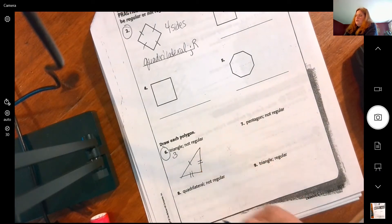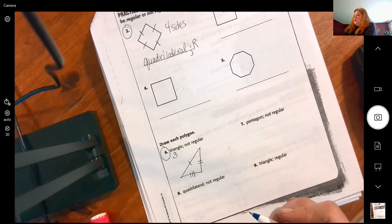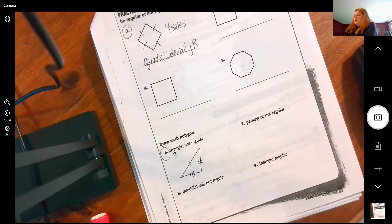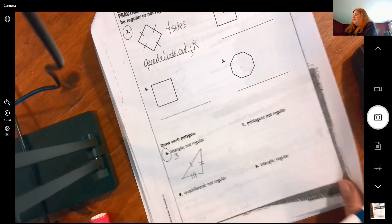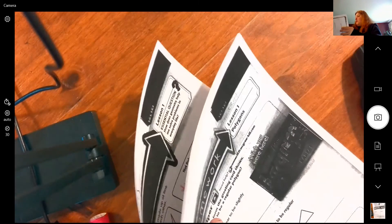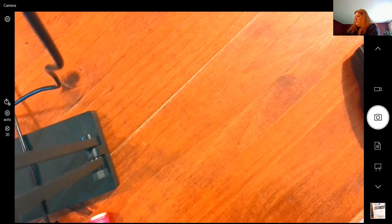You can even show that they're not all equal by showing your lines. This one is different than this one is different than this one.